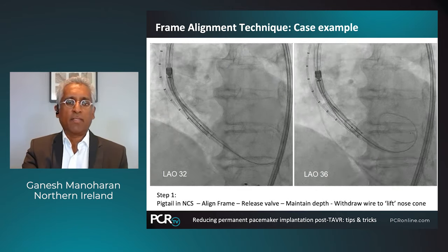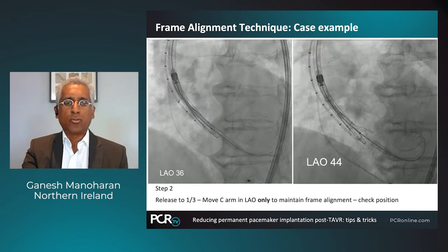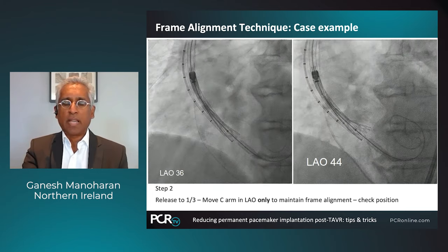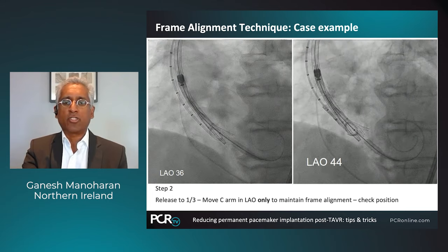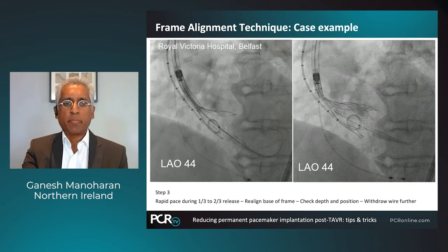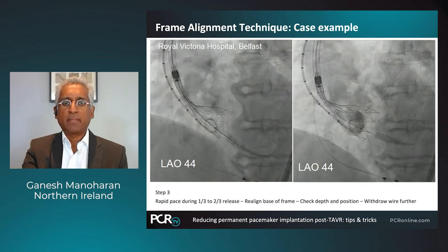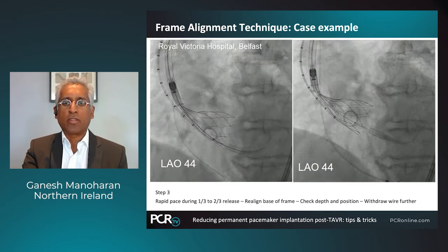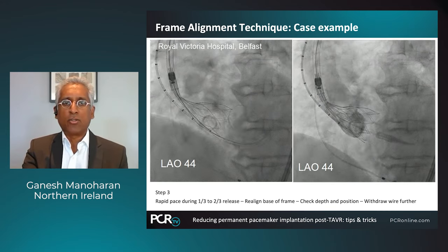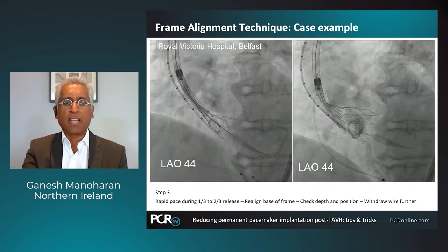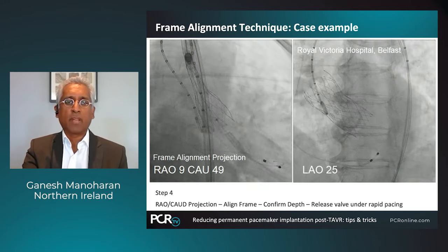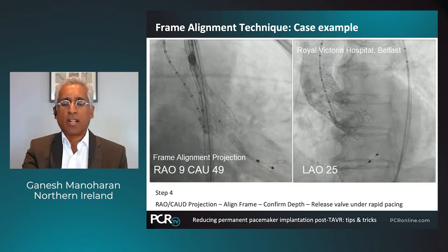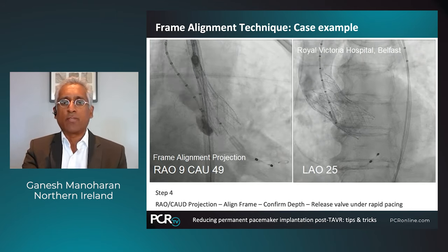You keep releasing the valve, going to RAO 36 to align the frame. At one-third release, you're at RAO 44. Depth is maintained at about two to three millimeters. Take an angiogram and check position. Then go from one-third to two-thirds with rapid pacing, realign the frame, and check position. Depth looks good at two-thirds — about three to four millimeters in both the non-coronary and left coronary. The important part: go to an RAO caudal angulation, align the frame — RAO 9 caudal 49 — take an angiogram, confirm depth, then go back to the previous RAO angulation and release the valve under rapid pacing again, realigning the frame this time to RAO 25.